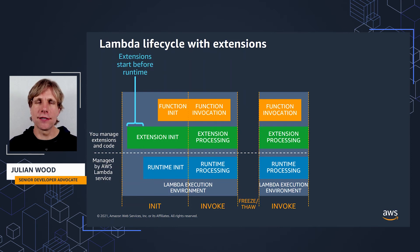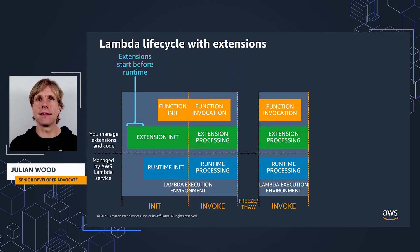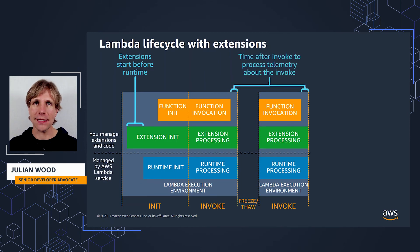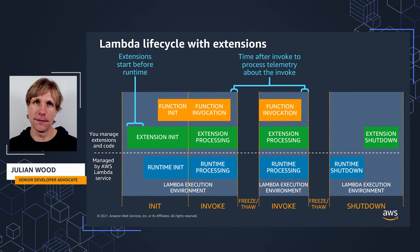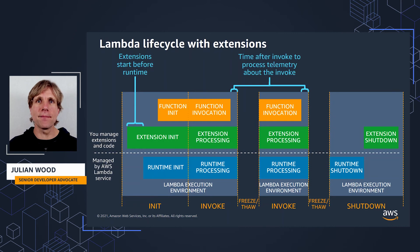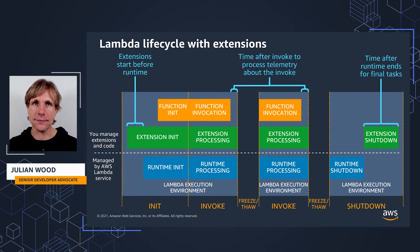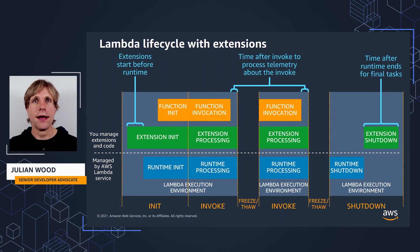Then the function invokes and the extension continues processing. Lambda freezes the execution environment when all extensions signal they've finished processing, and unfreezes when a new invocation comes in for a warm start. The extension can do some processing after the invocation — for example, to process telemetry about that particular invocation. If there are no further pending invokes or Lambda refreshes the execution environment, the Runtime shuts down, and then the extension has time to run some final tasks before the execution environment is removed — such as sending out remaining logs or telemetry data, notifying, or closing connections to other systems.